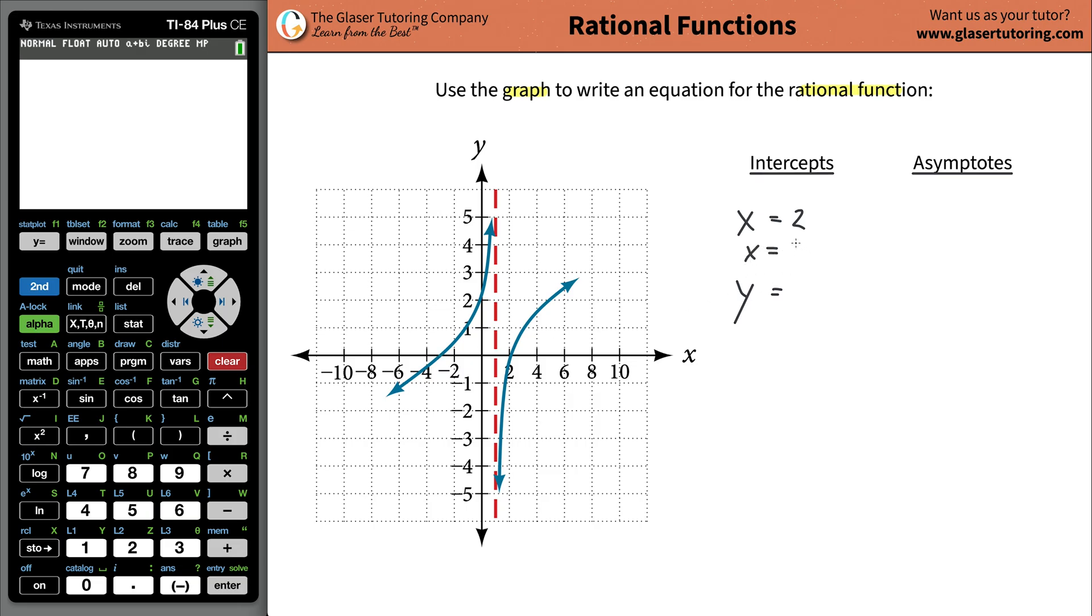So we're going to have two X intercepts, and we should probably write the coordinates. So it'd be three comma zero and two comma zero. Actually not three, negative three. Oops, almost made a silly mistake.